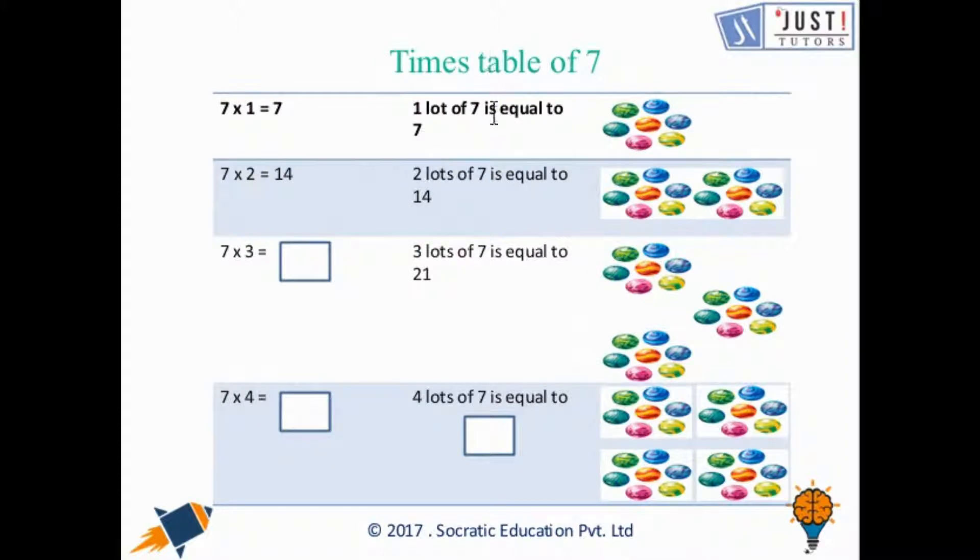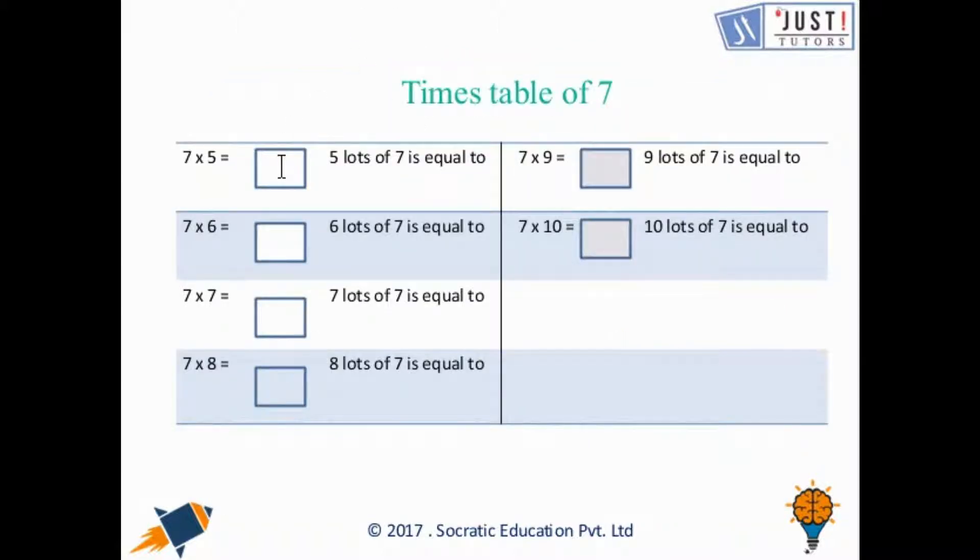Let us move forward in discussing the times table of 7. That pattern will now be changed to adding 7 each and every time as we move forward. Now 7 times 1 is 7, 7 times 2 is 14, 7 times 3 will be 21, whereas 7 times 4 is 28, 7 times 5 is 35, and 7 times 6 is 42. You can see here that 6 times 7 or 7 times 6 will both be the same as 42 because it is just switching the numbers around. Now 7 times 7 will be equal to 49.